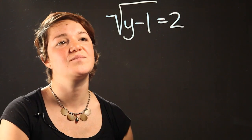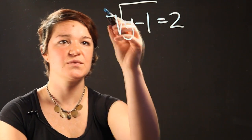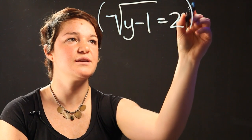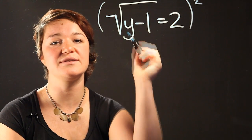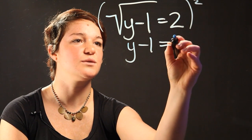How do you solve that? You would square both sides. So you take the whole equation and square it in order to get rid of this radical sign, and what you're going to get is y minus 1 is equal to 4.